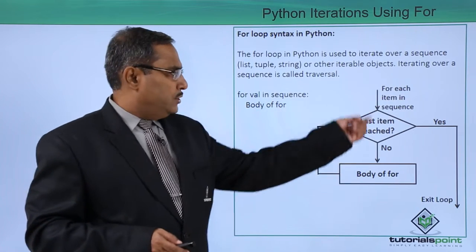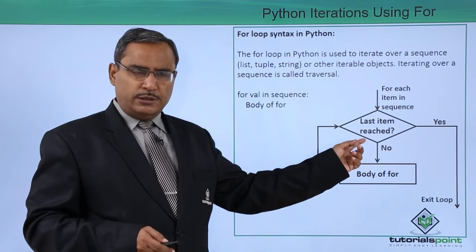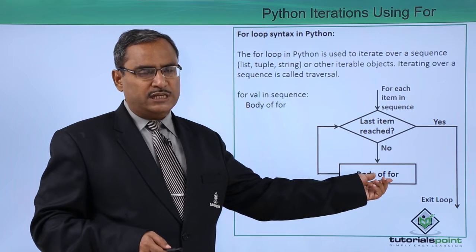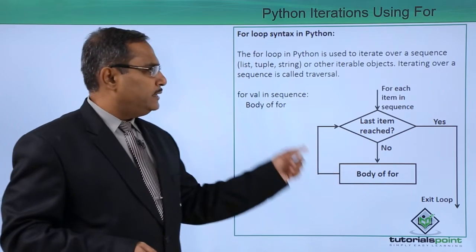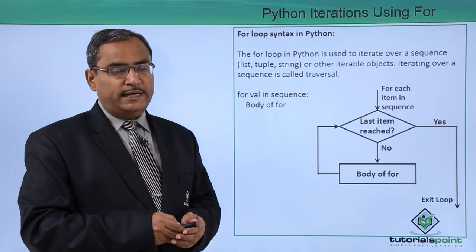Here is a flowchart. For each item in sequence, last item reached? If it is no then body of for will get executed on that item which has been picked up. If the last item has been reached then it will exit loop. In this way the respective flowchart will be working on this for loop syntax in Python.